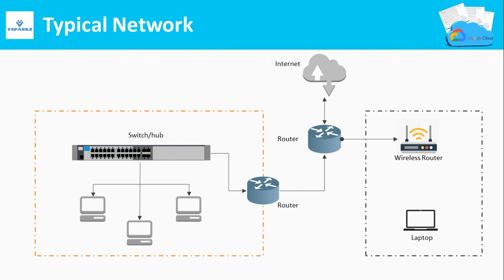This picture shows a simple diagram of a network. You can see the network is composed of wireless devices as well as wired devices. These devices are called network devices. Each network device has its own functionalities — let us see them one by one.